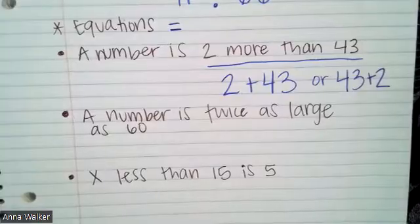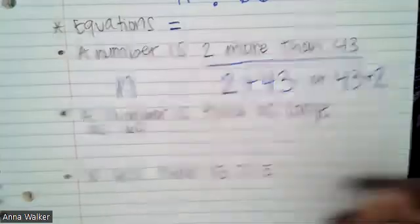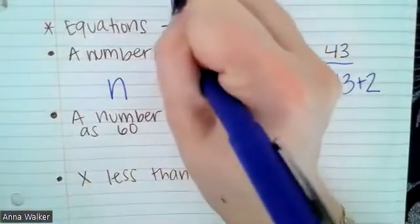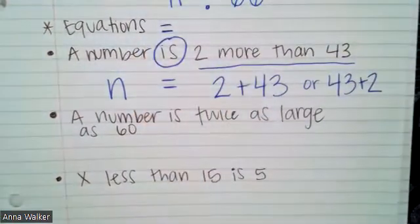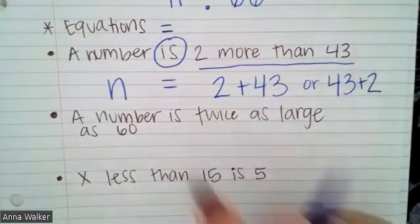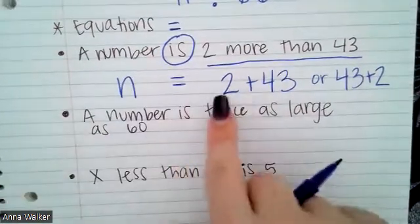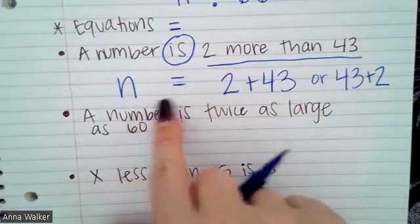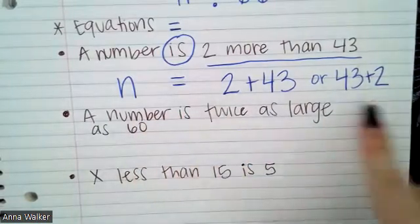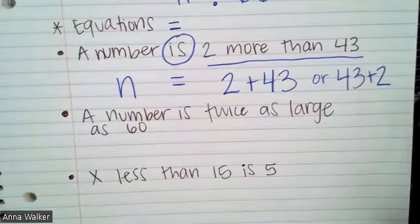Either one of those is fine, but it says a number is, so we're just going to use N to represent our number. This word is, is kind of the key to help you understand that it's an equation is going to be equal to. So a number is two more than 43 is N. The number is equal to two plus 43, or you could say N is equal to 43 plus two. So either one of those equations mean the same thing.